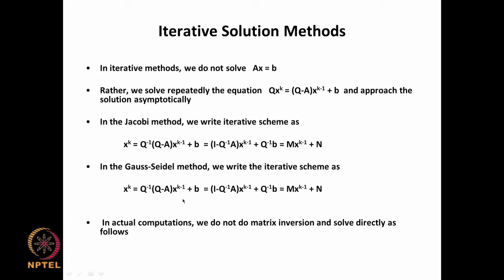In both these methods it looks like we have to compute Q inverse and then multiply by Q, which seems like complicated matrix procedures — but it is not really necessary to do it that way. We do not perform matrix inversion and matrix combinations; instead we solve directly in the following way.